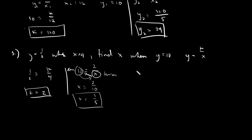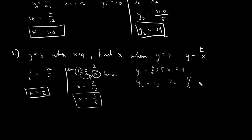Let's verify: y sub 1 is 1/2 (0.5) and x sub 1 is 4; y sub 2 is 10 and x sub 2 is 1/5 (0.2). What happened is y increased from 0.5 to 10, and x decreased from 4 to 0.2. Good — this is under inverse variation.